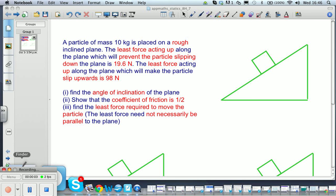This is an applied maths problem on statics related to friction. We're told of two situations with this particle of 10 kilograms. The least force acting up which will stop it moving down the plane is 19.6 newtons, and the least force acting up along the plane which will make it slip up is 98 newtons. Two separate situations, and we're asked to find the angle of inclination of the plane.